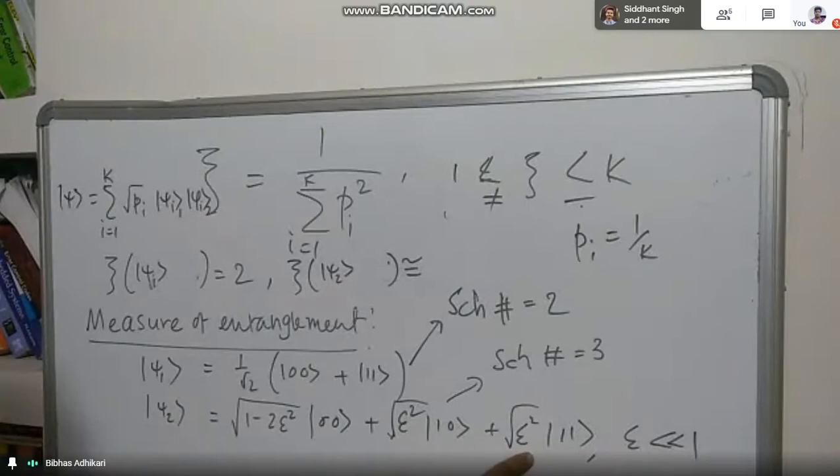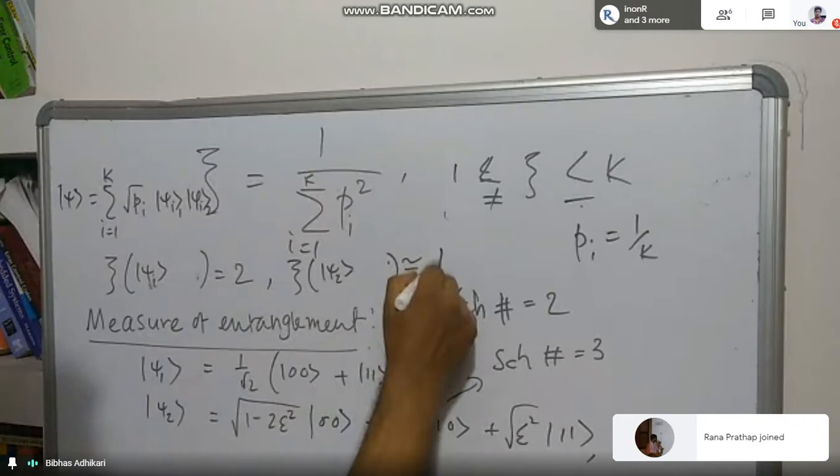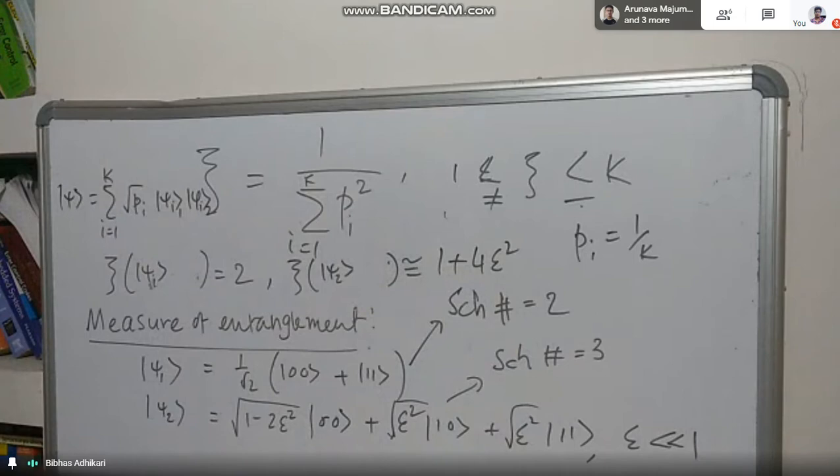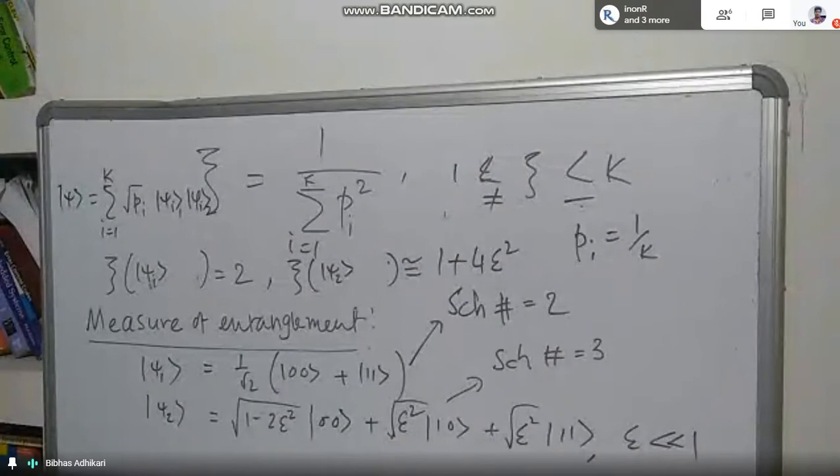So we have p1, p2, p3, and then 1 over (p1 squared plus p2 squared plus p3 squared), which gives approximately 1 plus 4 epsilon squared. That means entanglement here is less than entanglement in the other case, although this one has Schmidt number three and the other has Schmidt number two.